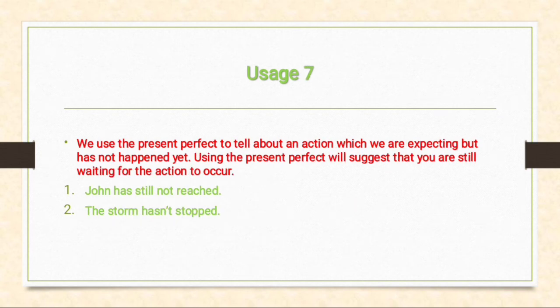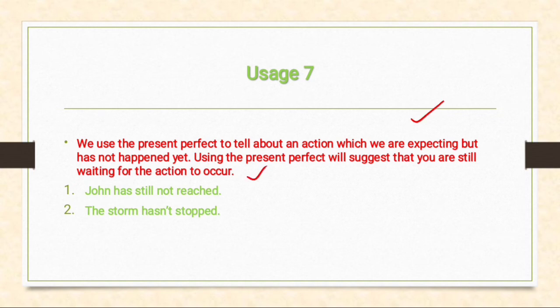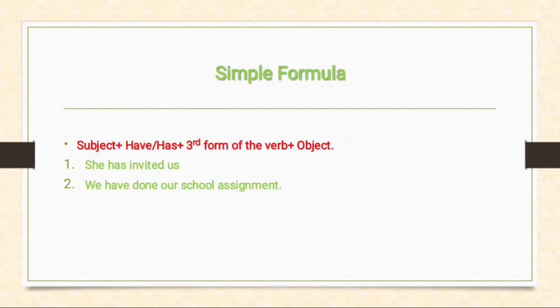Seventh usage: we use the present perfect tense to talk about an action which we are expecting but has not happened yet. Using the present perfect tense suggests that you are still waiting for the action to occur — that the action might or may happen. For example: 'John has still not reached.' 'The storm has not stopped.'